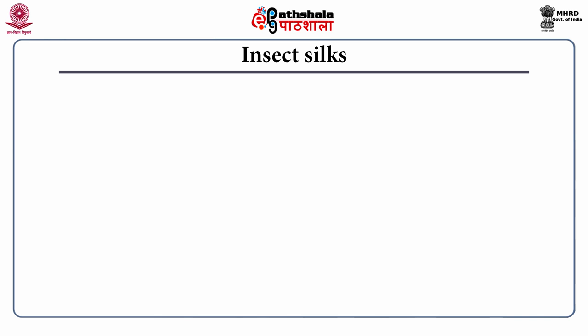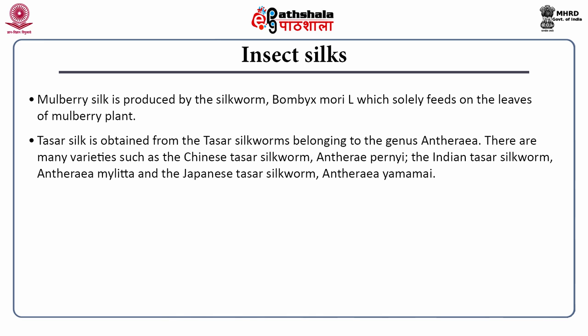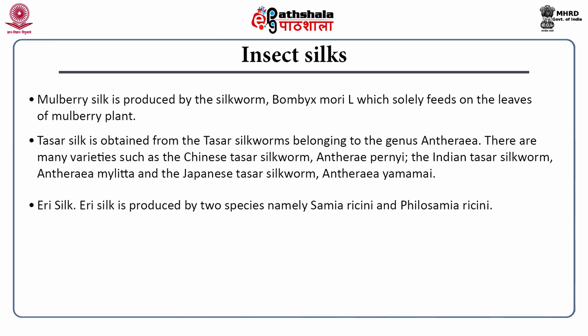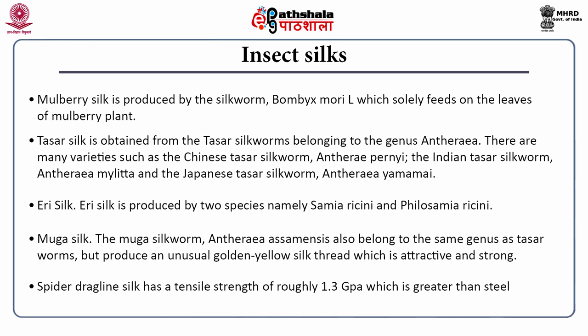The second important benefit from insects is insect silks. Mulberry silk is produced by the silkworm Bombyx mori, which solely feeds on mulberry leaves. Tassar silk is obtained from Tassar silkworms of the genus Antheraea, including Chinese Tassar silkworm Antheraea pernyi, Indian Tassar silkworm Antheraea mylitta, and Japanese Tassar silkworm Antheraea yamamai. Eri silk is produced by Samia ricini and Philosamia ricini. Muga silk, extracted from Antheraea assamensis, produces an unusual golden yellow silk thread. Spider dragline silk has a tensile strength of roughly 1.3 gigapascals, which is greater than steel.